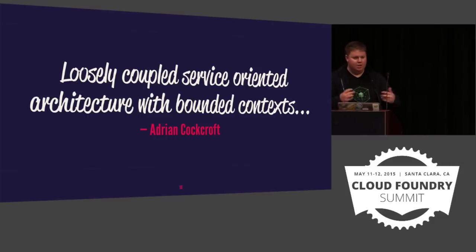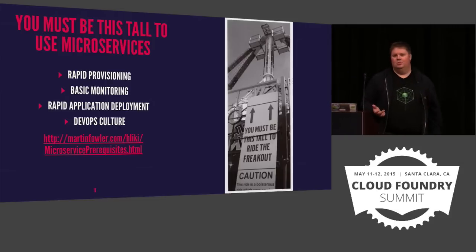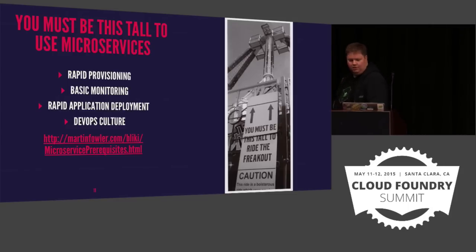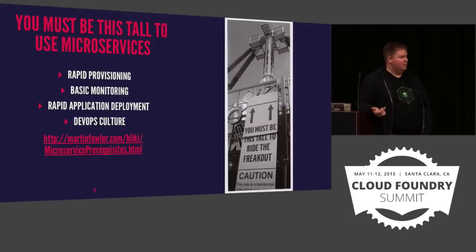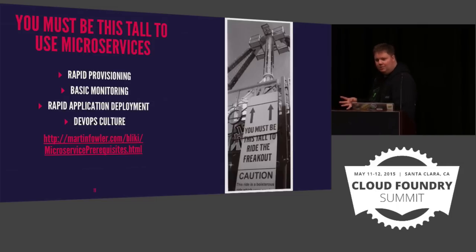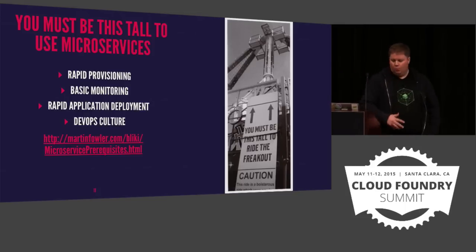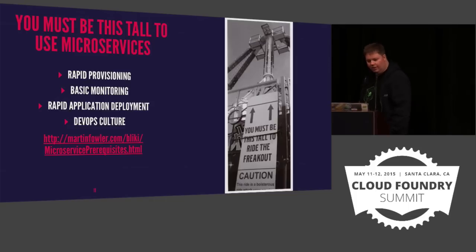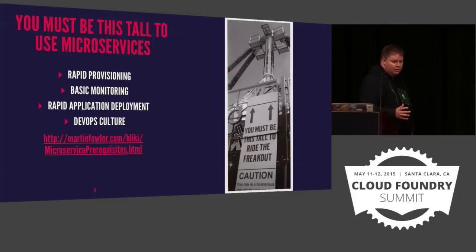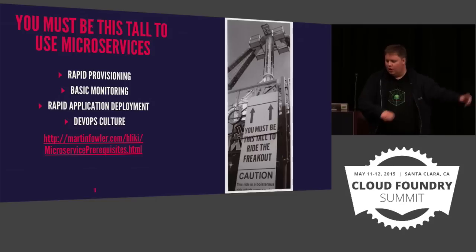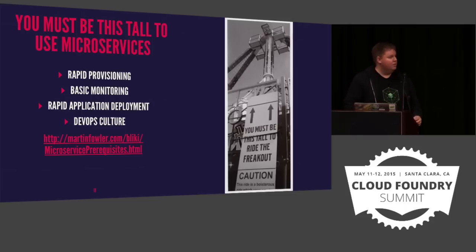There's a sense in which you can't just start doing this. Martin described it as 'you must be this tall to ride the microservices ride' — probably one of the best ways I've heard it explained. If you can't provision new environments in seconds or minutes, if you can't monitor things reasonably well, if you can't deploy new code very quickly, and if you don't have something that feels like a DevOps culture — then you probably need to come back next year. Fix these things first.